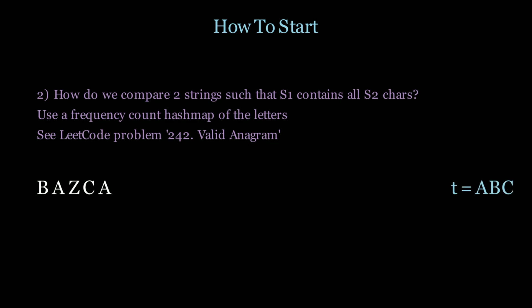Let's do a brief overview of how that looks. We have a string b, a, z, c, a and we have t which is a, b, c. We want to know if b, a, z, c, a contains a, b, c. The first step is to create a frequency map of the string t: one a, one b, and one c. Then we iterate through all the letters of the string and for every letter we find in the frequency hash map we decrement the count. There is no z so we ignore that. We decrement b and a, then we decrement c.